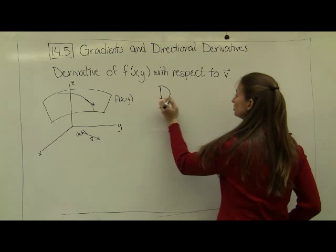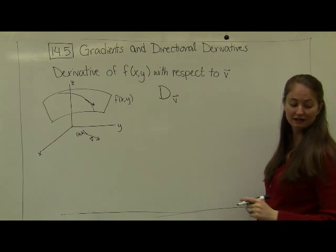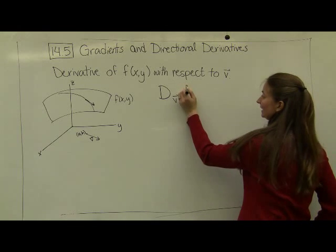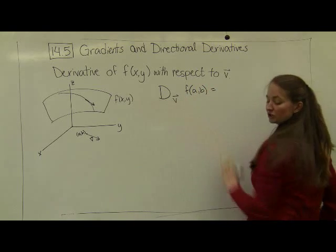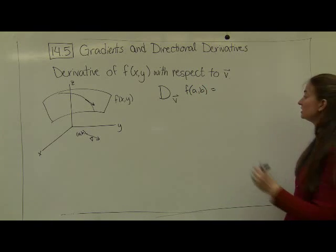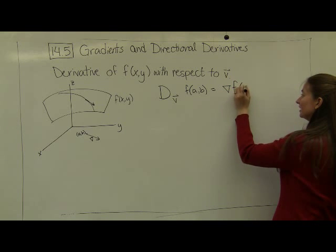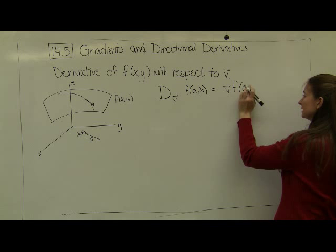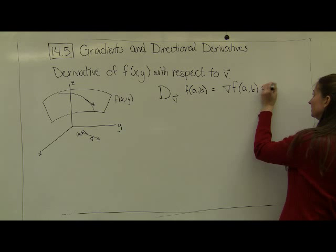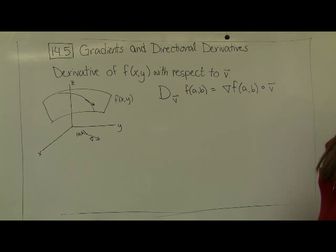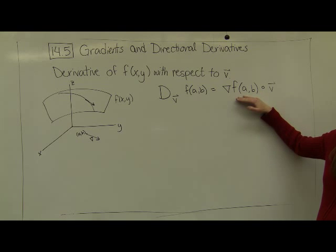So our derivative with respect to v, the notation is given by d of v, and we're going to evaluate that at f of a, b, where a, b is some point, and f is the function that we're talking about. Our definition is going to be the gradient of f evaluated at a, b dotted with our vector v. Now, why is this? This comes exactly from what we just saw with composition of paths.